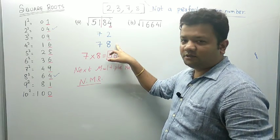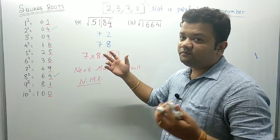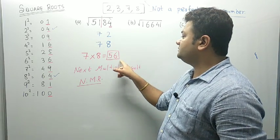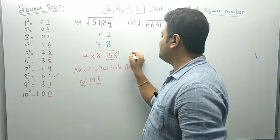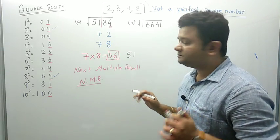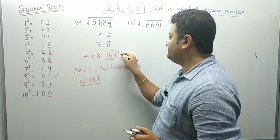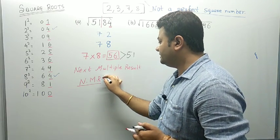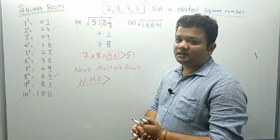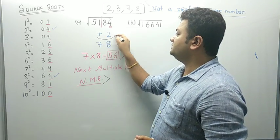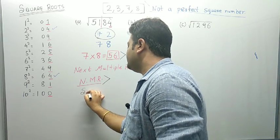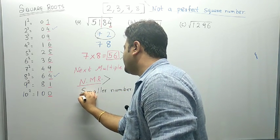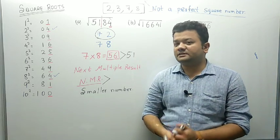As soon as we got 56, we compare this 56 with the remaining number, which is 51. In comparing 56 and 51, we observe that 56 is more than 51 — that means the Next Multiple Result is greater. So whenever we find that the Next Multiple Result is greater, our answer is going to be the smaller number. The smaller number here is 72. So 72 is the required square root of 5184. I am repeating the entire thing once again for you.